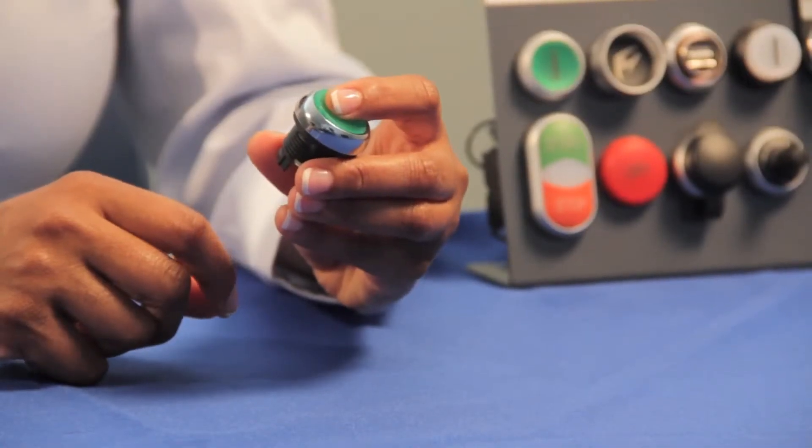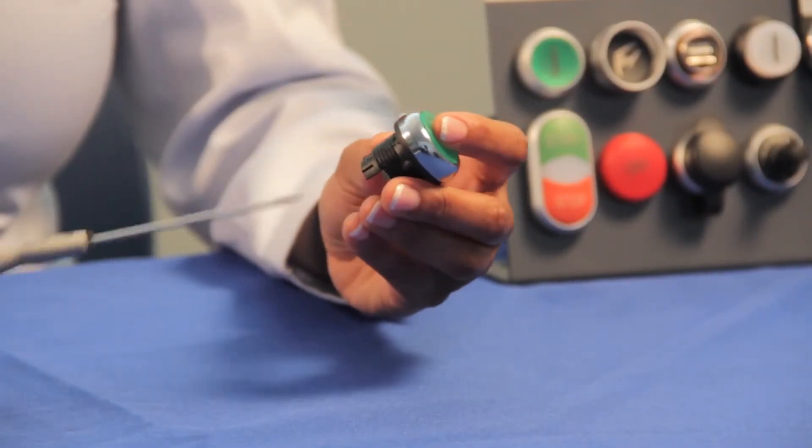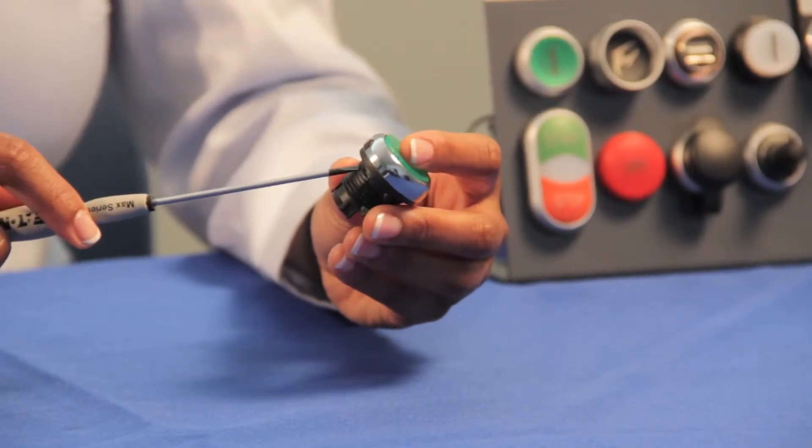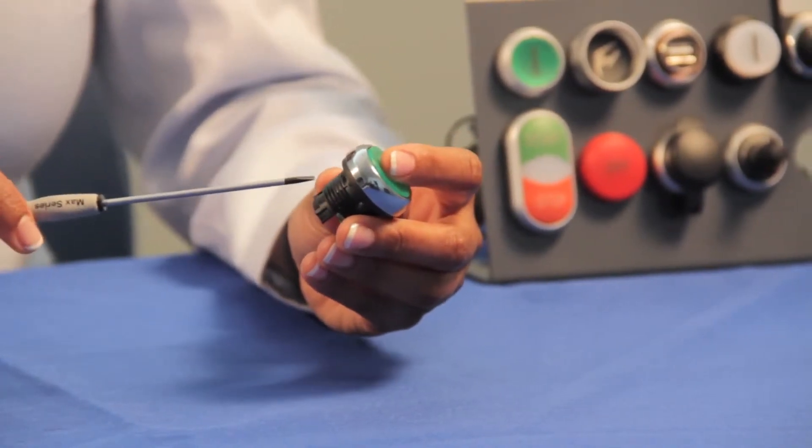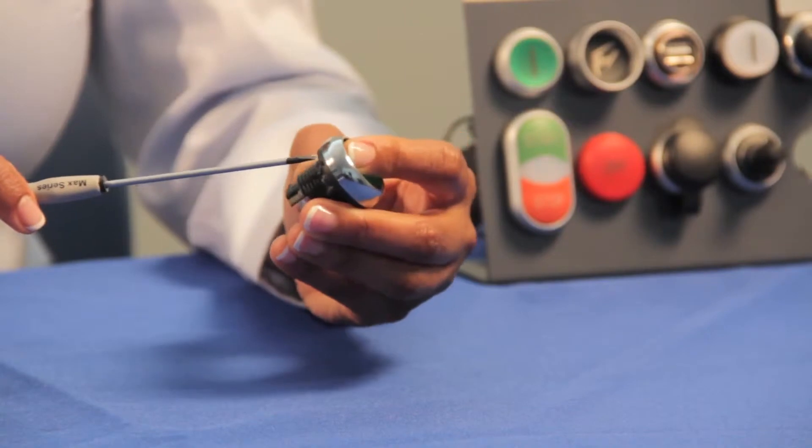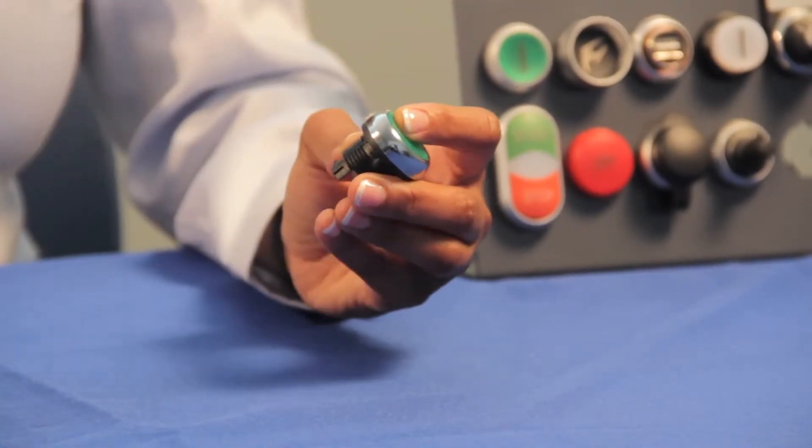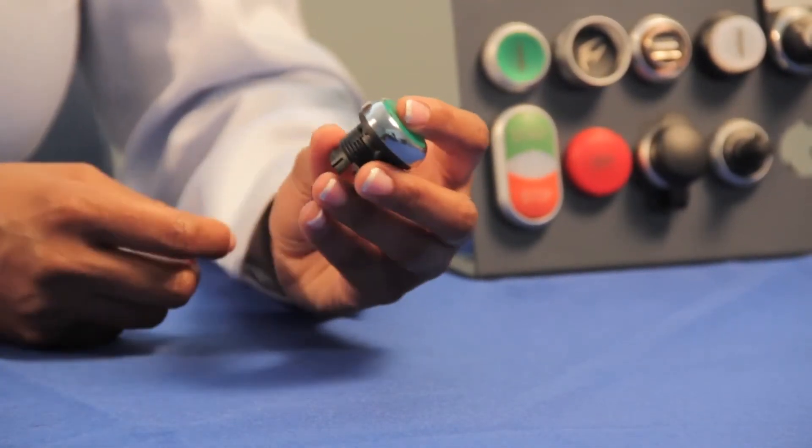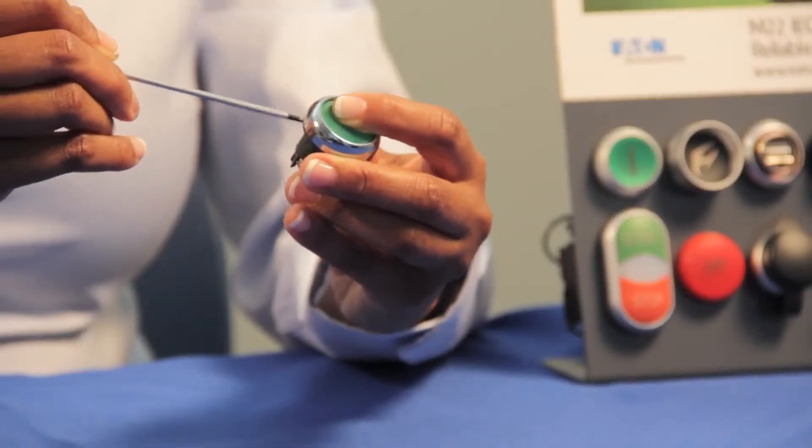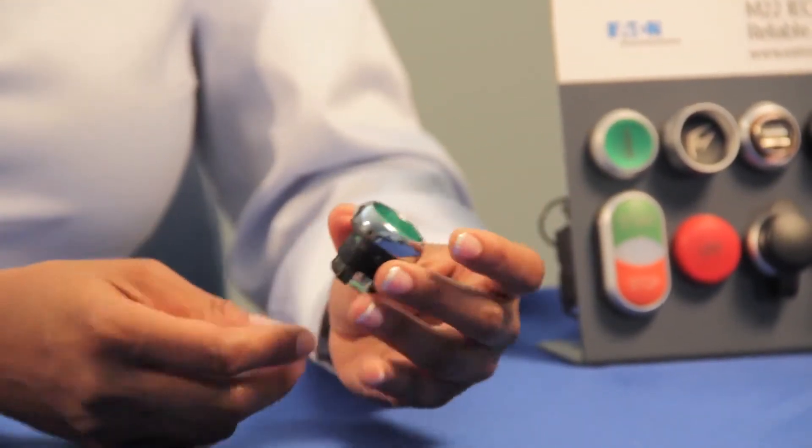Converting a maintained push button to momentary operation is also achievable on our M22 push buttons. First, identify the slot on the side of your operator. Push down on the operator until you see a slider with a metal notch. If you slide the locking ring to the right your push button is now in momentary and sliding it to the left converts it back to maintained operation.